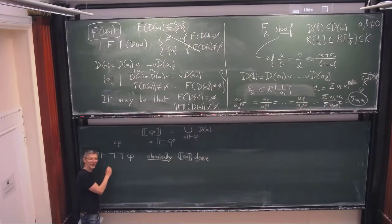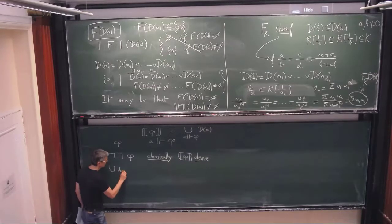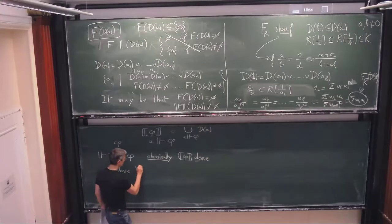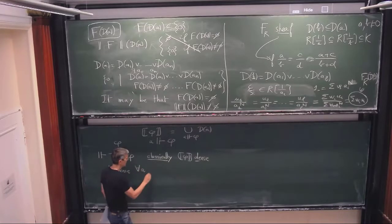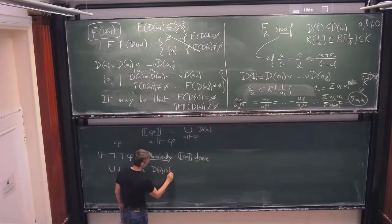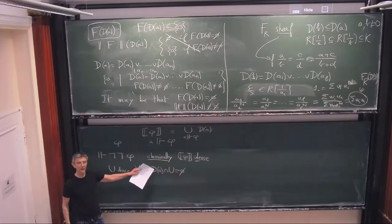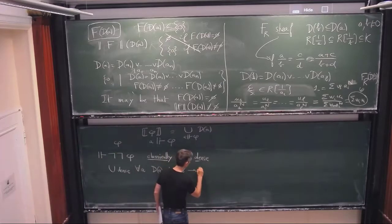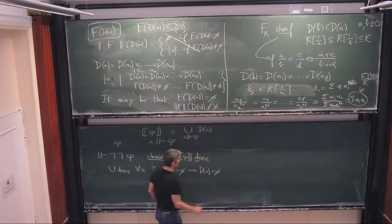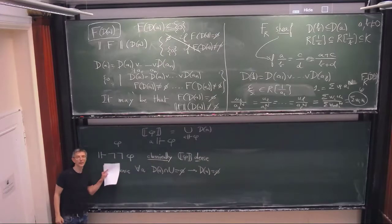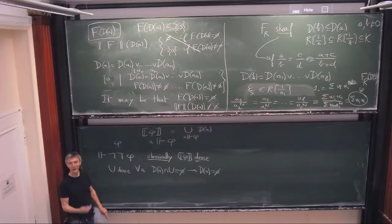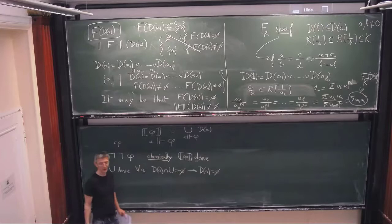What would you define an open subset to be called dense? Only if for any basic open subset D(a), if the intersection of U and D(a) is empty, then D(a) is already empty. With this definition of dense subset, these two notions are equivalent, and classically this definition is the standard definition of dense.